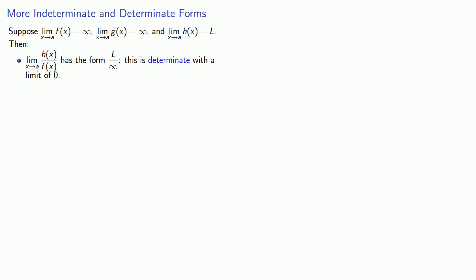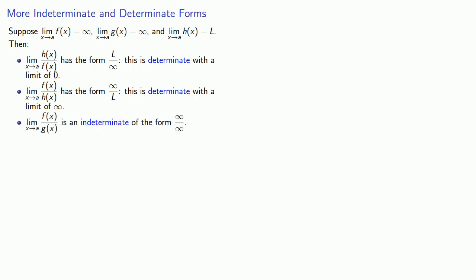This will give us a couple more indeterminate and determinate forms. Suppose the limit as x approaches a of f(x) is infinity, the limit of g is also infinity, and the limit of h is l, some determinate number. The limit of h(x) over f(x) — the quotient of the limits — will be l over infinity. This is determinate with a value of 0, because we're dividing a number by an increasingly larger number. Likewise, the limit of f(x) over h(x) has the form infinity over l, which is determinate with a value of infinity. Finally, the limit of f(x) over g(x) is indeterminate because it has the form infinity over infinity, and as with other indeterminate forms, we can often simplify these algebraically.